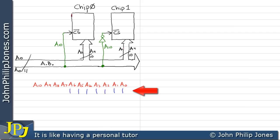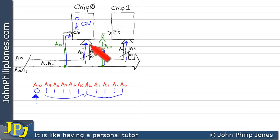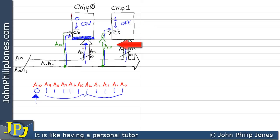Now let's choose a pattern where A0 through A9 are all 1 but A10 is 0. These 10 lines go to chip 0 and chip 1. But A10 being 0 goes to the chip select, making chip 0's select 0 — switching chip 0 on. It also goes via the NOT gate to chip 1's chip select, making that a 1, so chip 1 is off. Consequently, the last location in chip 0 is selected, as it received all 1s on A0–A9.